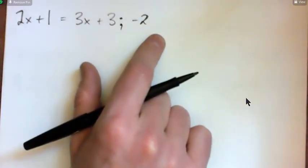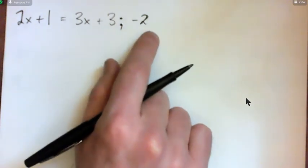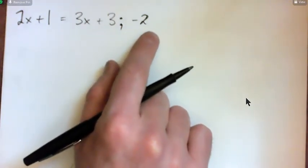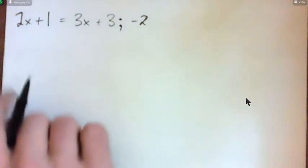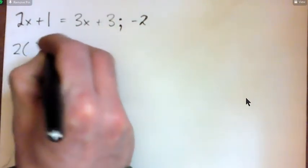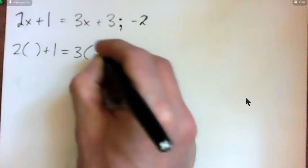The question says check to see if the number to the right of each of the following equations is the solution to the equation. So all we have to do is plug the negative 2 in for x and see if it works.